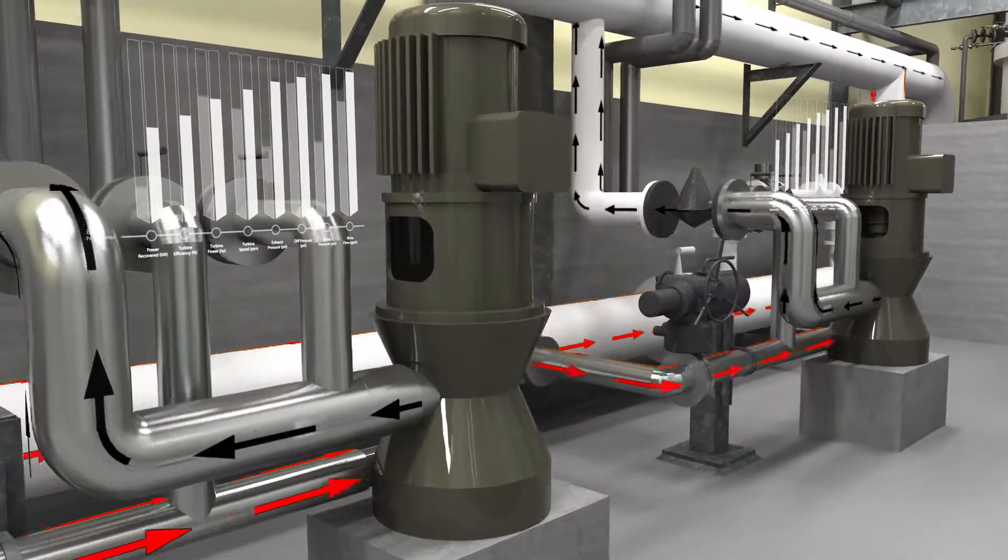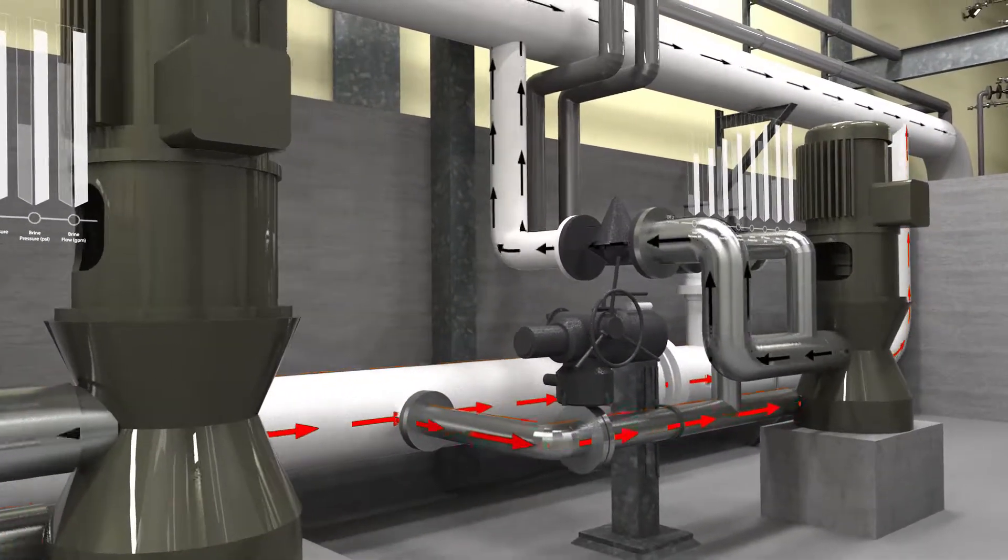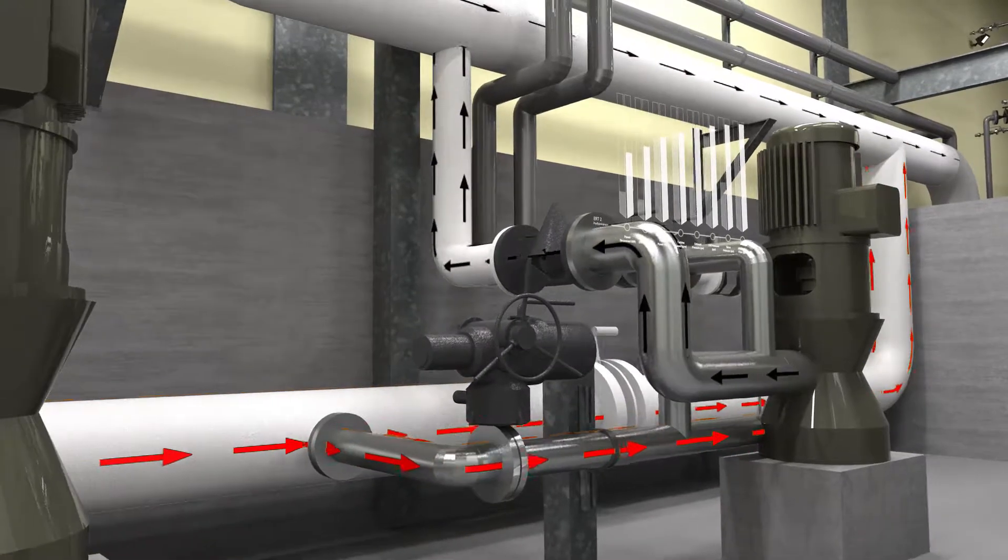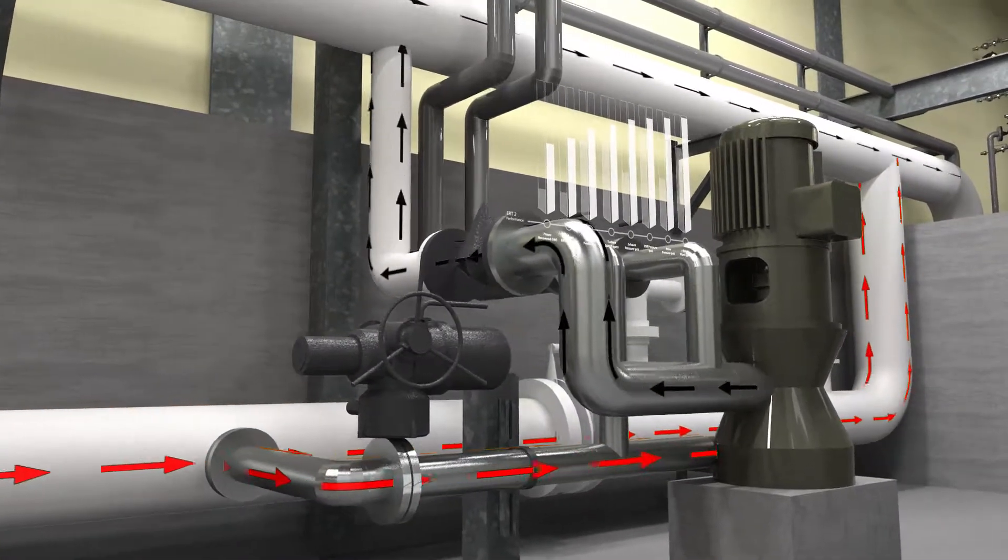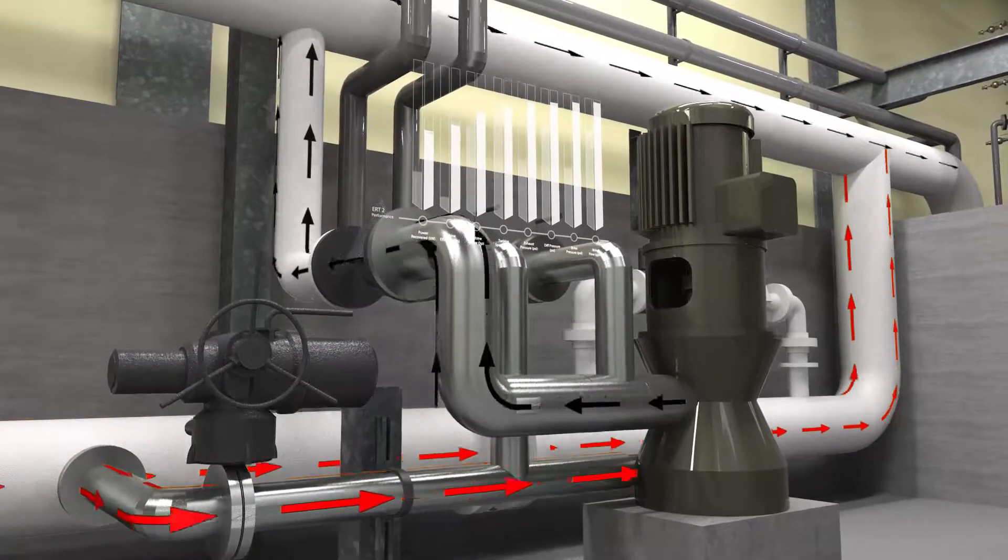The concentrate entering the CRF is highly pressurized from the Chino II desalters reverse osmosis process. This concentrate flow stream and its high pressure represent excess energy that can be converted into electricity.